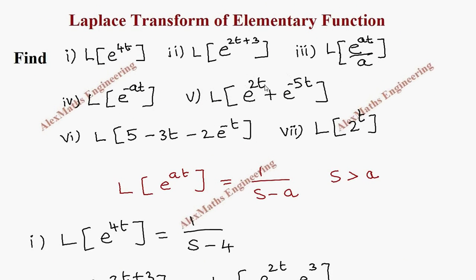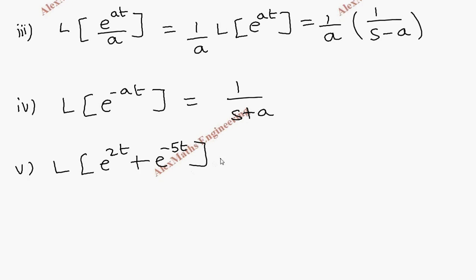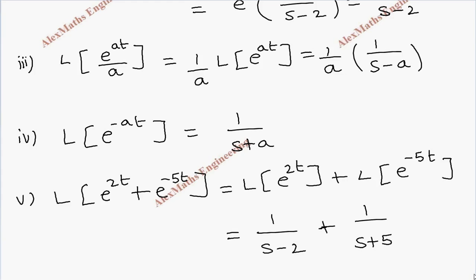The next subdivision is L{e^(2t) + e^(-5t)}. We split this into two parts: L{e^(2t)} plus L{e^(-5t)}. Applying the formula, in place of a we have 2 for the first term giving 1/(s - 2), and for the second term a is minus 5, giving 1/(s + 5).